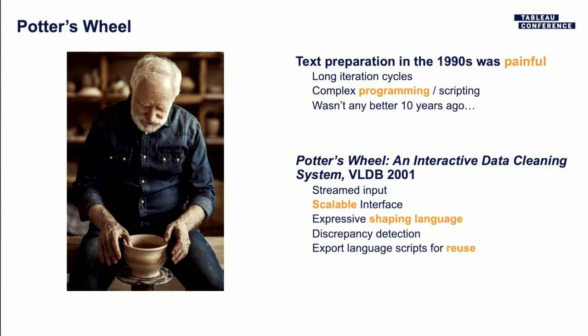Back in the 1990s things were bad — we were using Python scripts, all kinds of horrible things, and languages were slow so performance was kind of horrible. Then around 2001 there was a famous paper called the Potter's Wheel presented at the Very Large Databases Symposium, which had a lot of nice features and was the basis of a lot of future work — I think Trifacta was partly based on it too. What I've been doing with this project is taking those ideas, adding some of my own, and building something Tableau-esque that's very focused on how the user wants to do things.